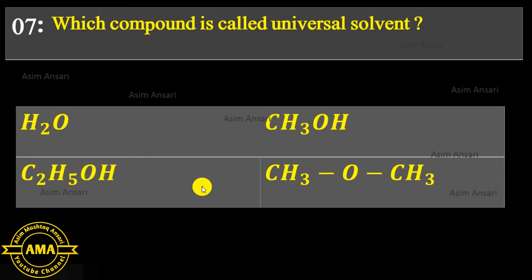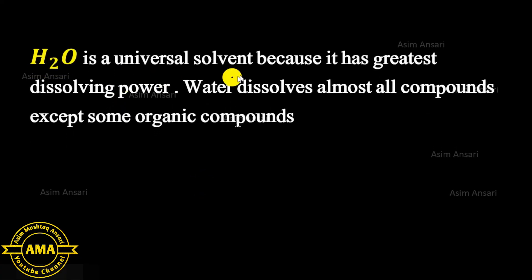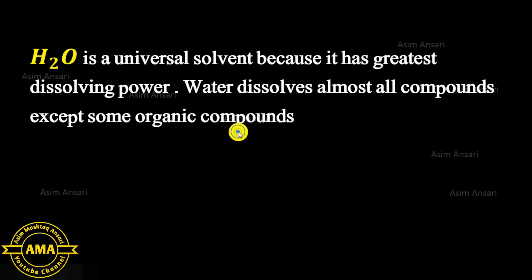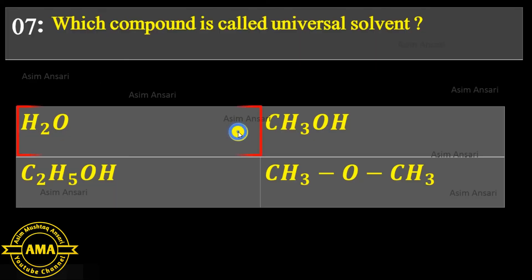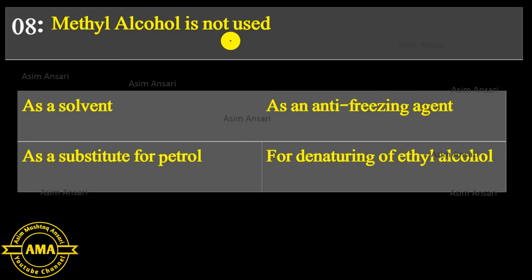Next MCQ: Which compound is called the universal solvent? Options: H2O, CH3OH, C2H5OH, CH3OCH3. H2O is the universal solvent because it has the greatest dissolving power — water dissolves almost all compounds except some organic compounds. The exact answer is H2O; water is called the universal solvent.